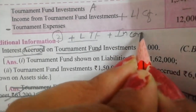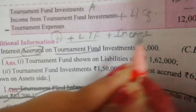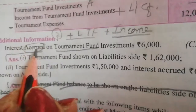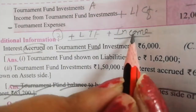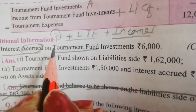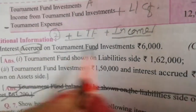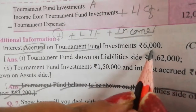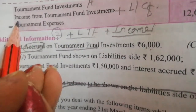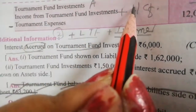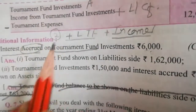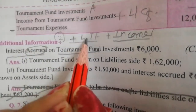Interest received on tournament fund — you can take the income in the income and expenditure account, because this is the source of your income. You can also take it on the liability side in the capital fund — the same entry as this one will go there.